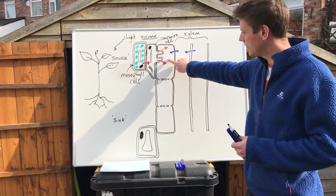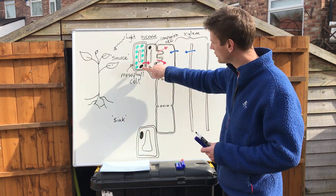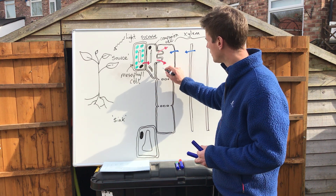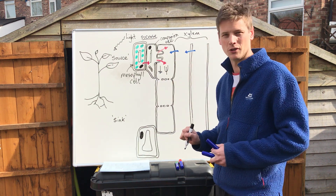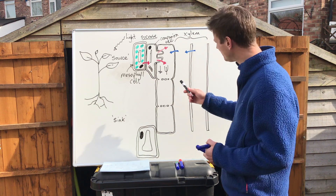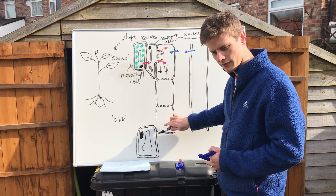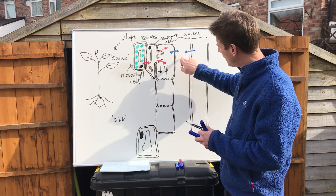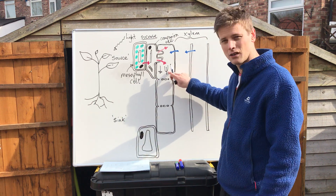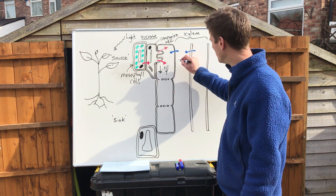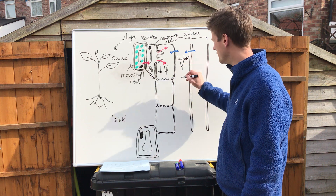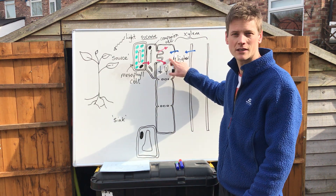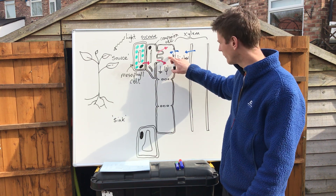When sucrose accumulates in the sieve tube at the source — close to where photosynthesis is happening — it lowers the water potential of the sieve tube element. The phloem, made up of these sieve tube elements, sits alongside xylem vessels which contain water. Because we have a low water potential in the phloem and a much higher water potential in the xylem, water moves by osmosis from the xylem into the sieve tube elements — into the phloem at the source.